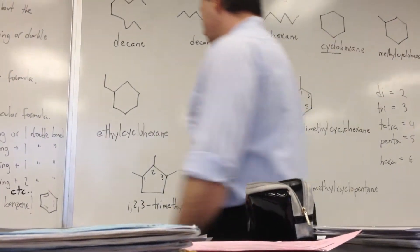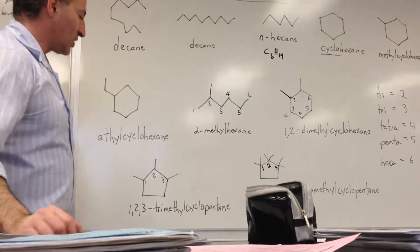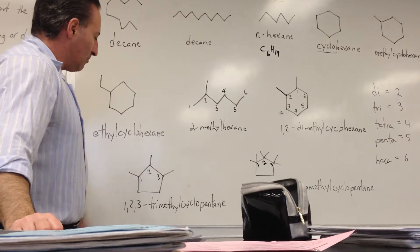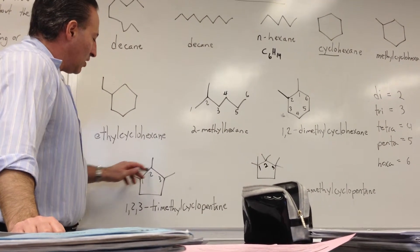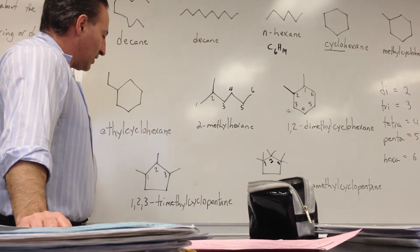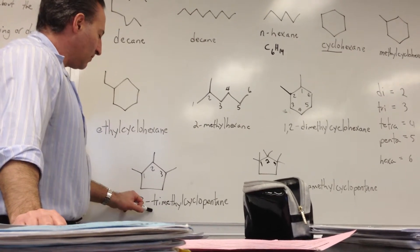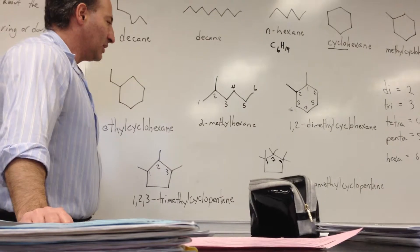This molecule is called 1,2,3-trimethylcyclopentane because there are 3 methyl group substituents on a cyclic pentane.